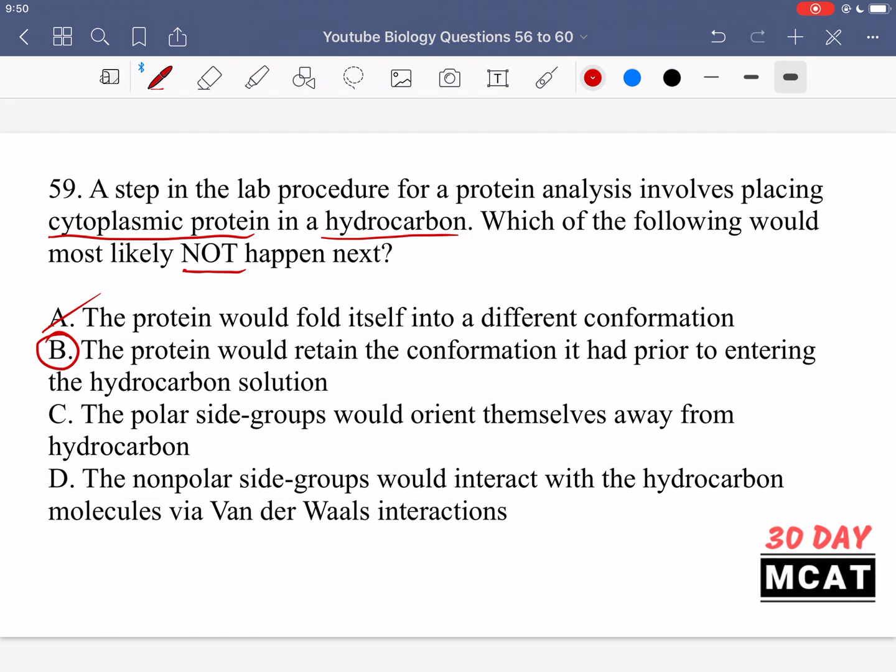Option C says the polar side groups would orient themselves away from the hydrocarbon. This is correct - they would fold inwards toward the inside of the protein and not try to interact with the solvent. Option D says the non-polar side groups would interact with the hydrocarbon molecules via van der Waals interactions. Yes, this would happen - the non-polar side groups would come out and be exposed to the solvent and have these favorable van der Waals interactions.